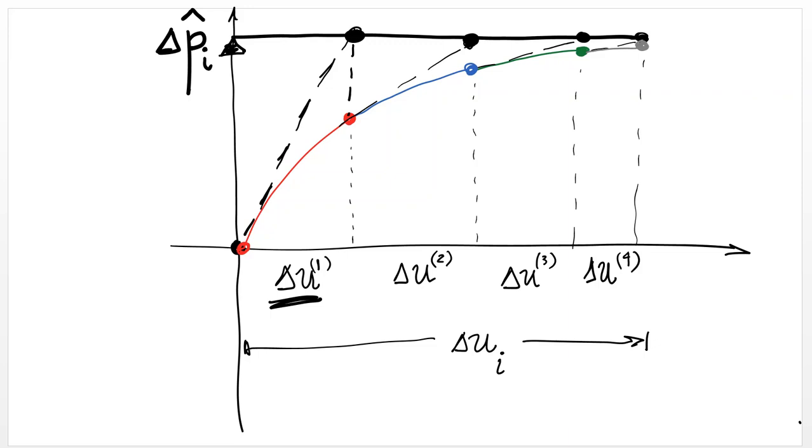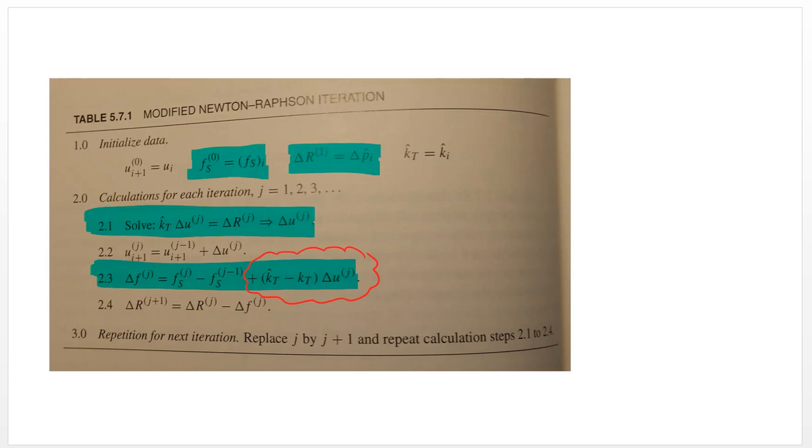Now, when you go into the actual restoring force of the system, you find out that you don't have the capability to resist that delta P hat with that delta U. So there is a residual. This is the delta R that appears in this equation right here.